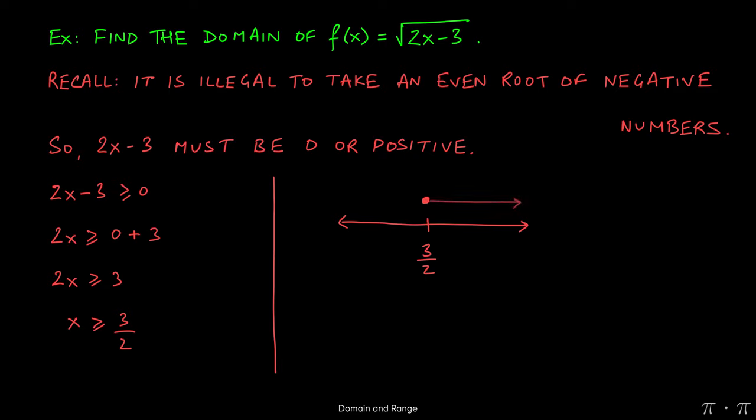So first, we try numbers to the right, and I jump the gun here, but I know for a fact that they're going to work. Let's pick a number, say, 5. Well, 2 times 5 is 10. 10 minus 3 is 7. I can find the square root of 7. It's a positive number.